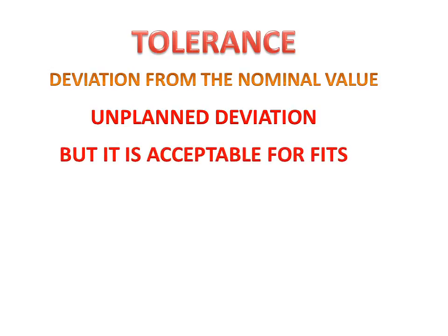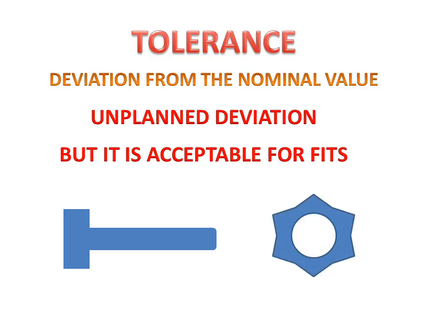Tolerance is acceptable for making fits. We can make acceptable fits with the help of tolerance. For example, if we have a bolt and a nut and we want to make a fit between them, the bolt's theoretical size is 10, with a tolerance of plus or minus 0.2.